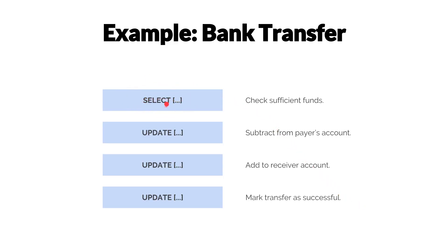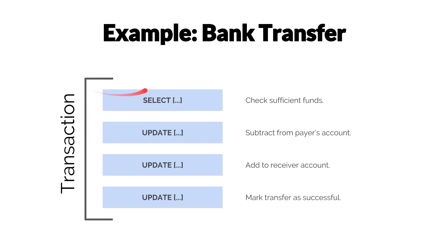We can do this by executing four queries against the database: first, a SELECT to check the funds, followed by three UPDATE statements for the subtraction, the addition, and finally marking the transfer as successful. How to group the queries into different transactions is up to the application programmer. We could perform each query in its own transaction, but for reasons we'll soon see, this is probably a bad idea. It would make more sense to treat all four queries as part of one logical transaction.